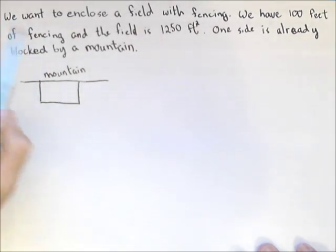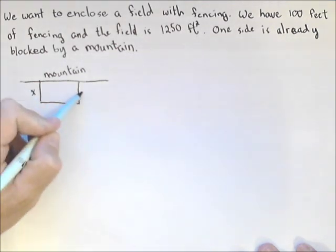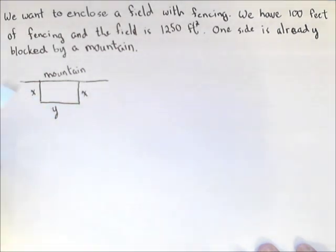Now, what we need, should have said it in the problem, this is going to be a rectangular field. These two sides will be the same, but this side doesn't necessarily have to be the same size. So we can use the same variable for these two sides, but we need to use a different one for this side.